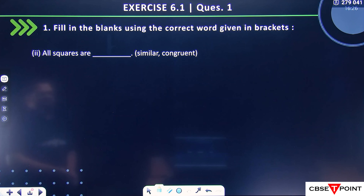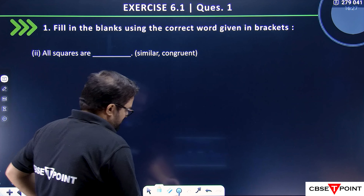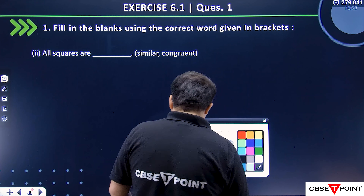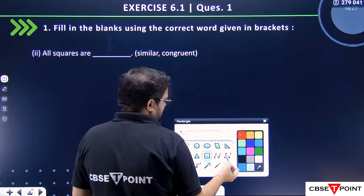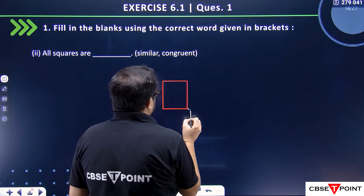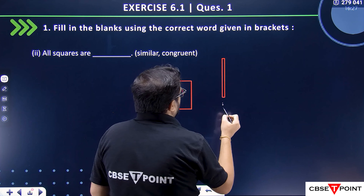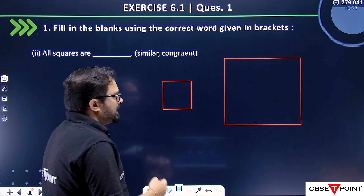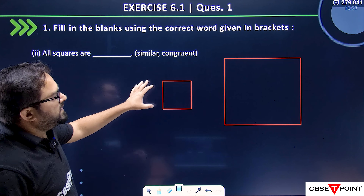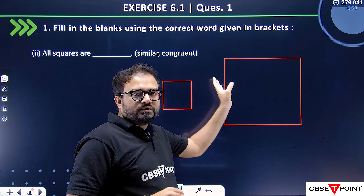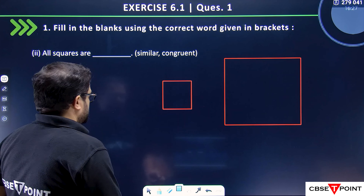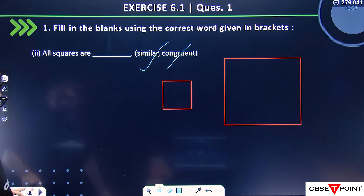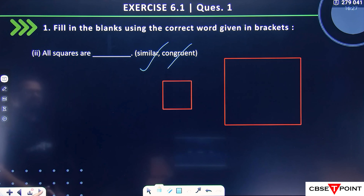All squares are similar. If I make a square, the same thing will follow — you will have no problem here. If you make one square and then another square, and you try to place one on top of the other, congruence will not always be possible. So all squares will be similar. This is correct.